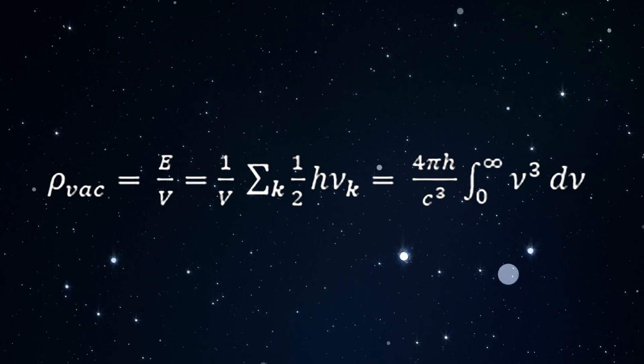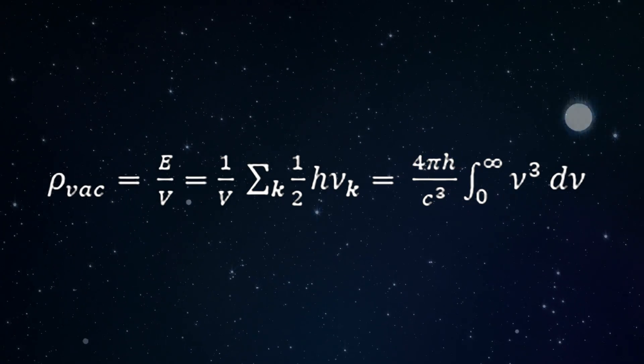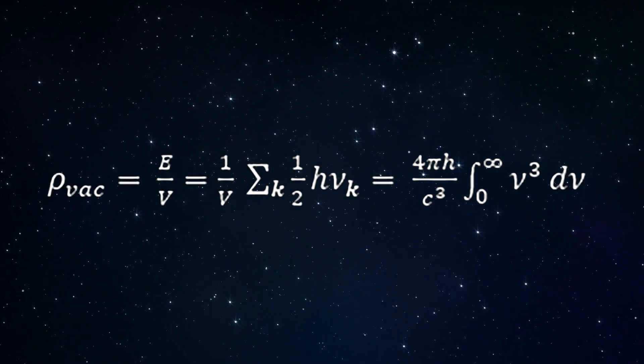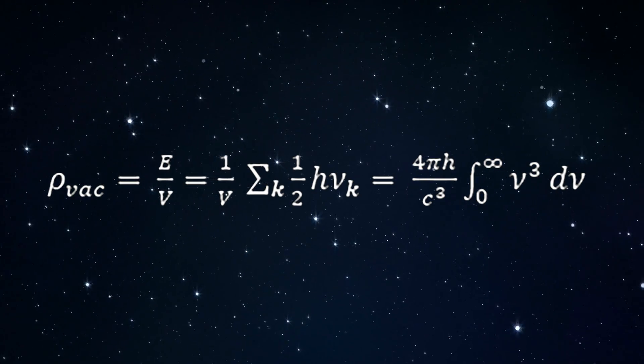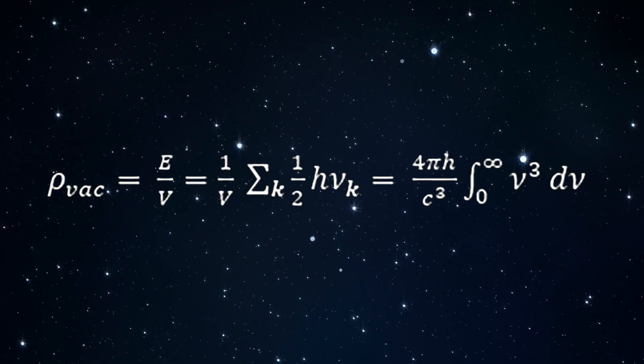We can remove the infinity by replacing the upper limit of the integral by a cutoff frequency set by the Planck scale, but this still results in a huge vacuum energy by 120 orders of magnitude.